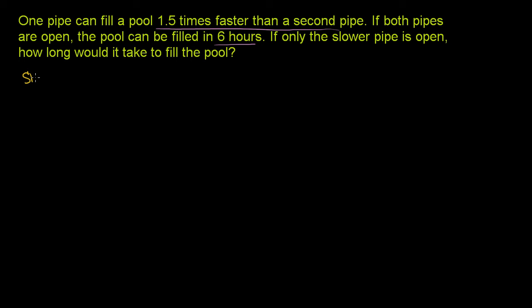Now right over here, I'm going to define that the slower pipe can fill a pool in R. So its rate is R pools per hour.